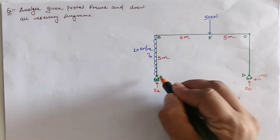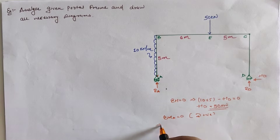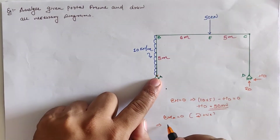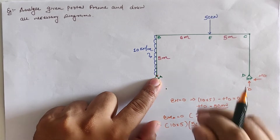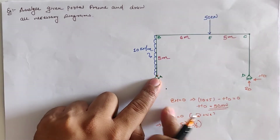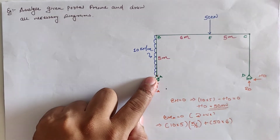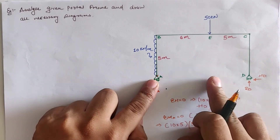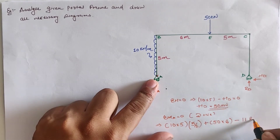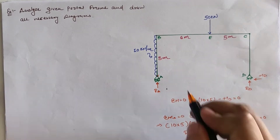Taking the moment at location A and treating clockwise moment as positive: the UDL creates a clockwise moment of 10 × 5 × (5/2). The 50 kN load also creates a clockwise moment of 50 × 6. RD creates an anticlockwise moment, so it is negative, with perpendicular distance from A equal to 6 + 5 = 11 meters. Solving this gives RD = 38.64 kN.